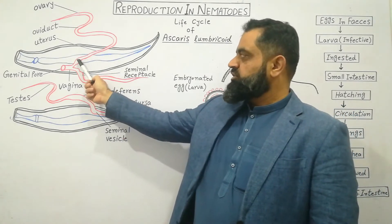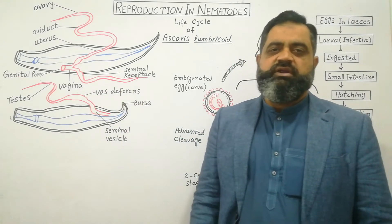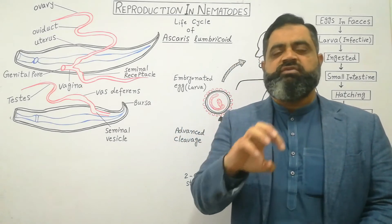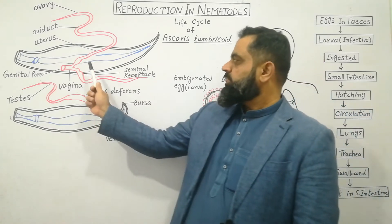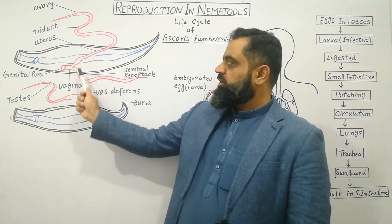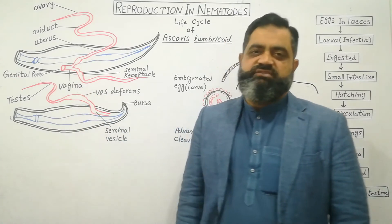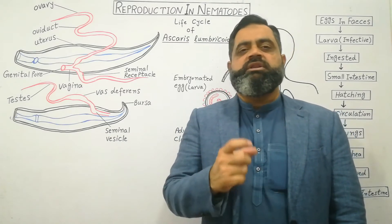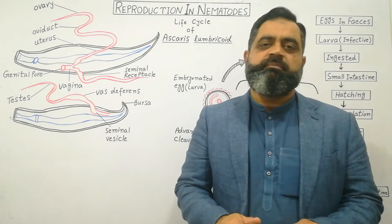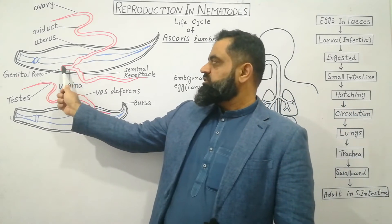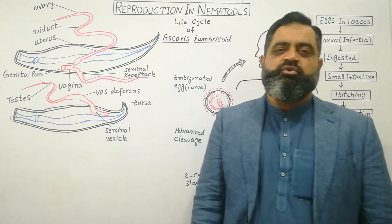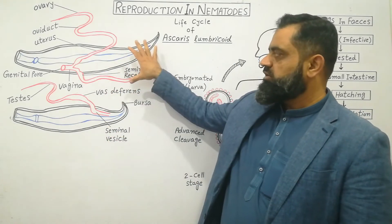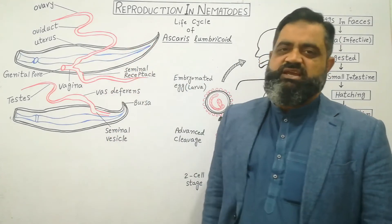The oviduct opens into a wide tube known as the uterus, where the process of maturation of eggs takes place. After that there is a wide portion known as the seminal receptacle, where sperms are received and eggs are stored for the purpose of fertilization. Both seminal receptacles of the top and lower ovaries open into a common structure known as the vagina. The vagina receives the penis and sperms from the male, and opens into a pore-like structure known as the genital pore through which the male does copulation. This is the female reproductive organ of Ascaris lumbricoides.